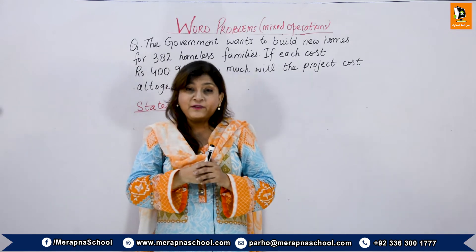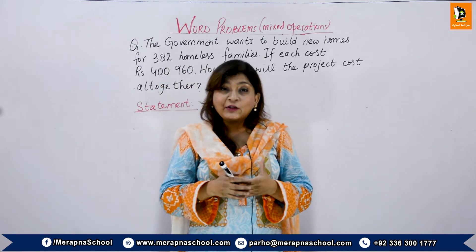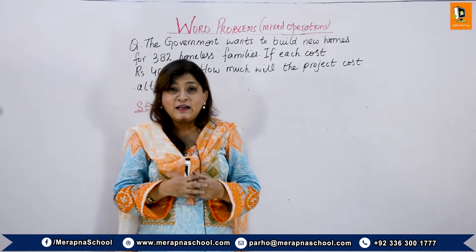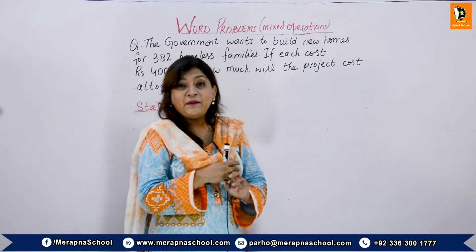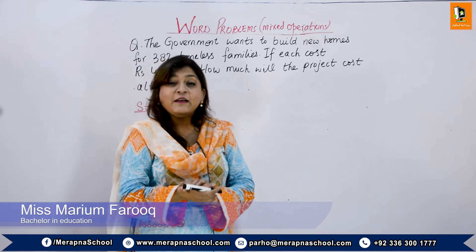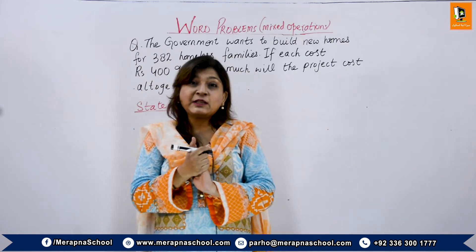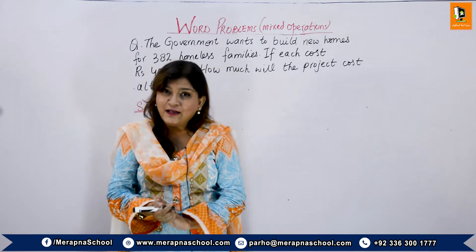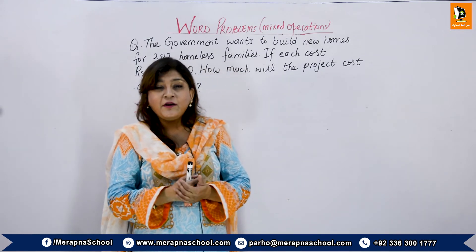'Altogether' can suggest addition, but not in this question. Why? Because they are not telling us the cost of two different houses — they are giving us two different pieces of information: the cost of one house, and the number of families. These are two different things, so we will not do addition here. To find the total cost for all 382 families, we have to multiply.